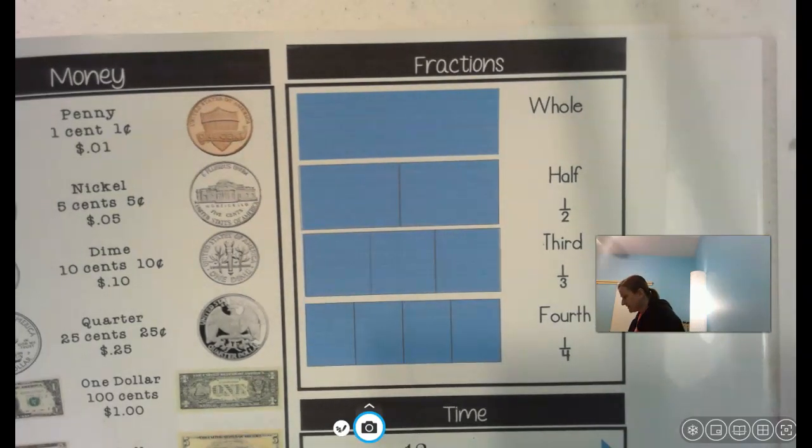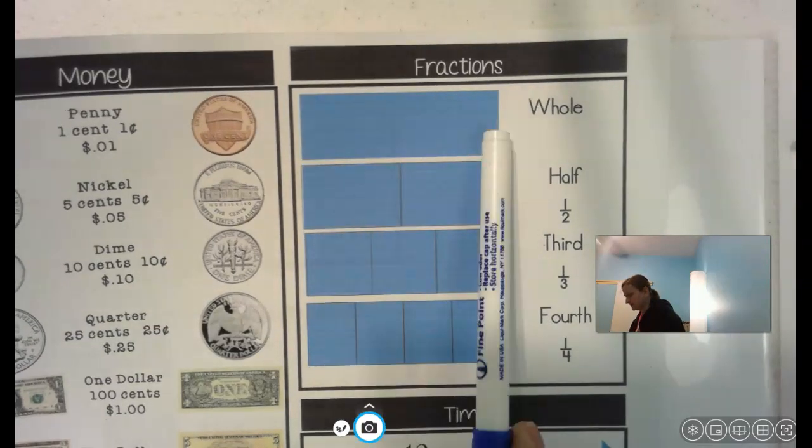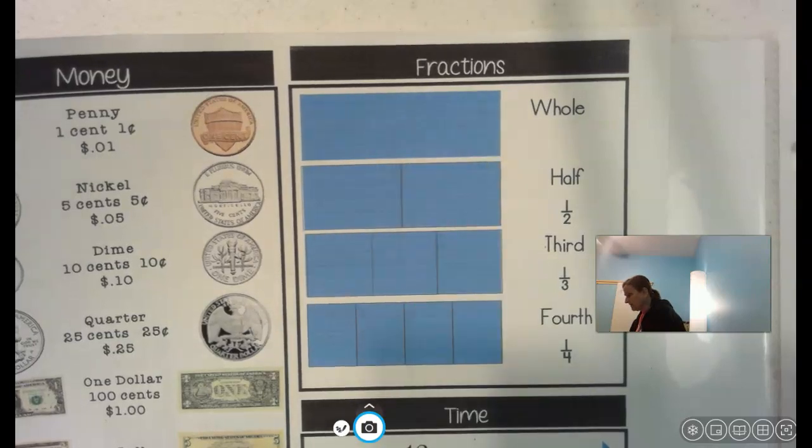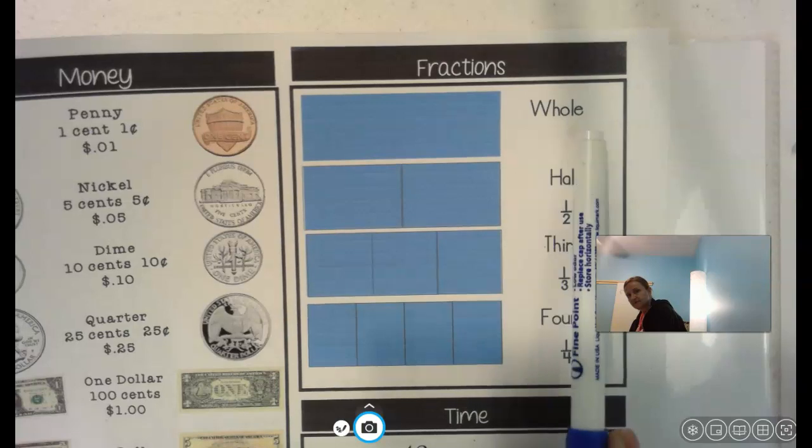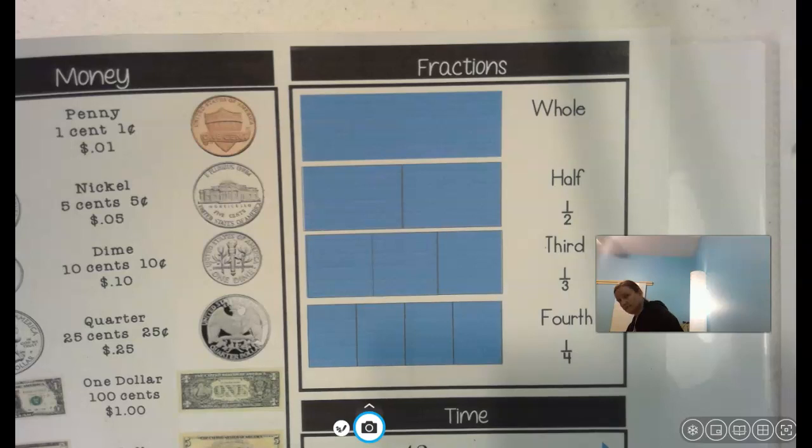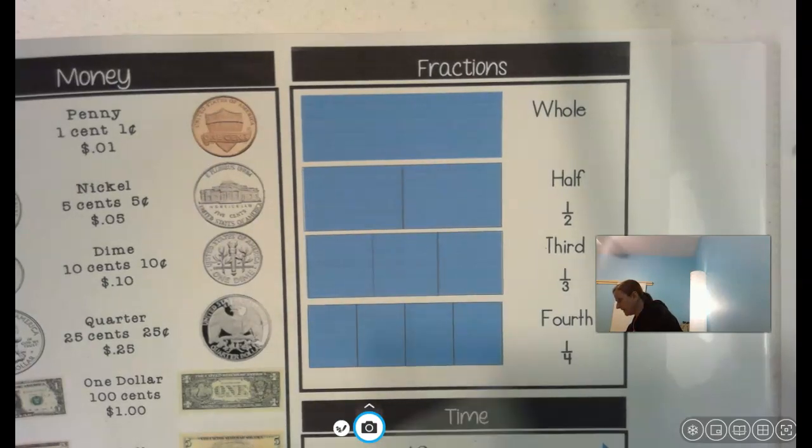If you have one whole thing that is not divided into sections, they call that the whole. But when things are broken into fractions, they're broken into equal parts. So they put this line down the middle and split it in half, one half.